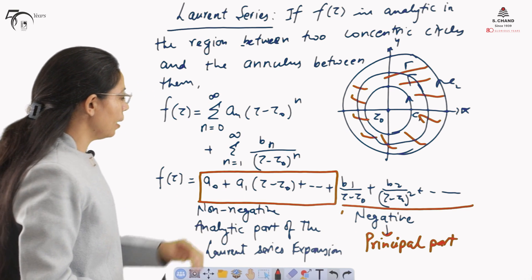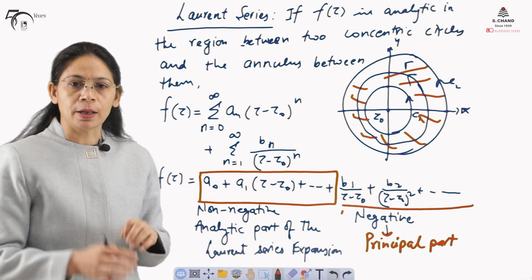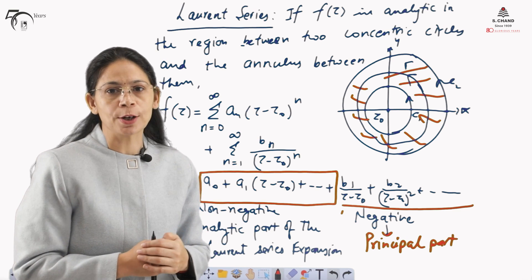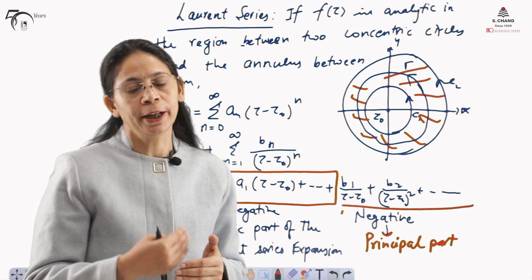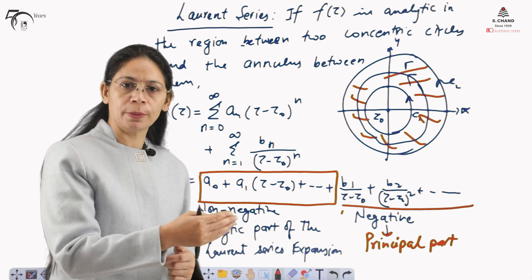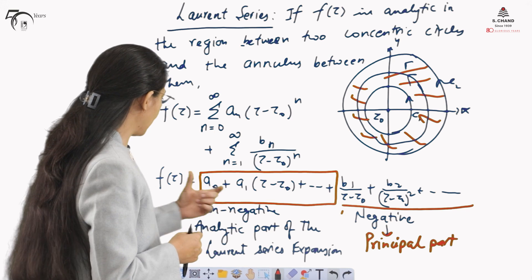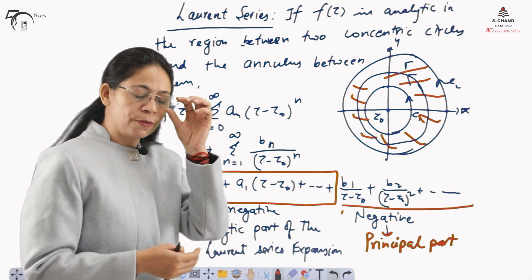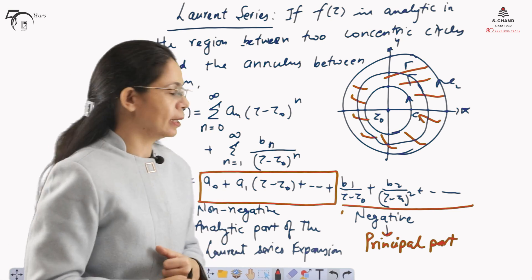We can see that if the principal part is zero, then we will be left with only the analytic part. In that case, when the principal part is zero for any Laurent series expansion of any function, the Laurent series gets converted into the Taylor series expansion. You can refer to the previous videos for Taylor series expansion. So when the negative powers of (z minus z naught) become zero, the Laurent series expansion reduces to the Taylor series expansion.